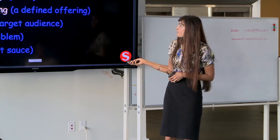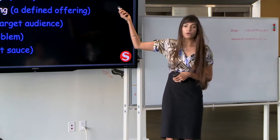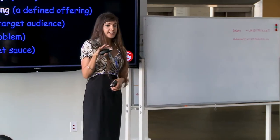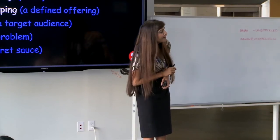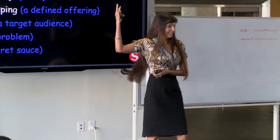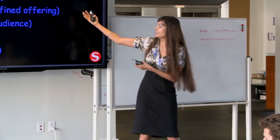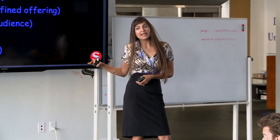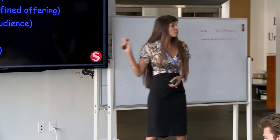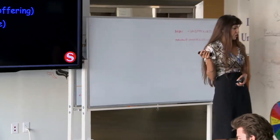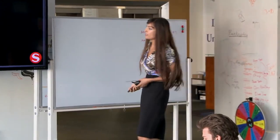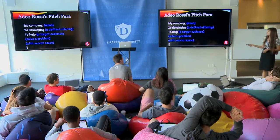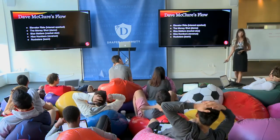Do you know Adior Rossi? This is his framework. You want to come up with multiple pitch ideas. One of them is for when you're at a party and someone goes, 'So what do you do?' — 'My company is developing to help solve a problem with secret sauce.' You always want to be ready with that. This is a great example of a pitch structure you can use to answer that question.